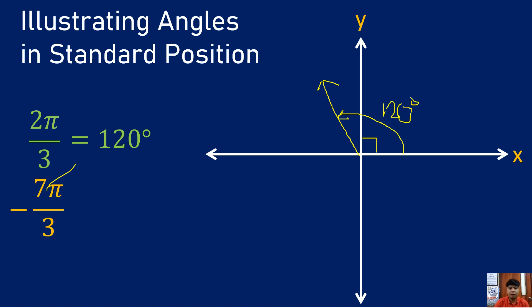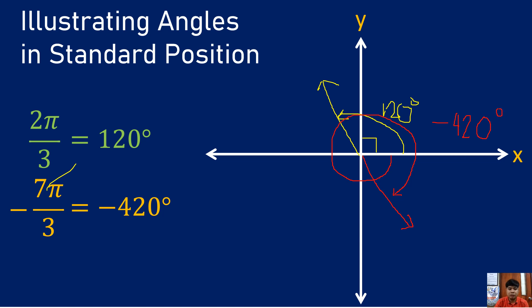What about negative 7π/3? That is a negative angle, meaning the rotation must be clockwise. We convert it to degree measurement — that equals negative 420 degrees. So we rotate clockwise: one complete revolution of 360 degrees, and we just need 60 more degrees to complete negative 420 degrees. The negative sign tells you the rotation is clockwise. That is how we illustrate these two radians — you just need to convert them into degrees to understand the rotation. See you in the next lesson, thanks for watching.